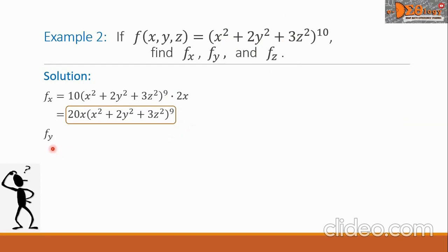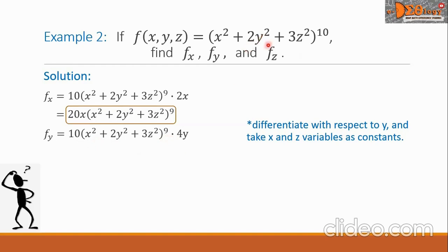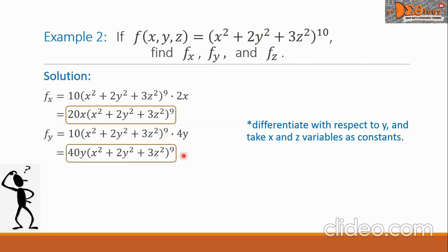Next is f sub y. We differentiate with respect to y, taking x and z as constants. By the chain rule, the derivative is 10 times the quantity (x squared plus 2y squared plus 3z squared) raised to the 9th power, times the derivative of 2y squared, which is 4y. Simplifying, 10 times 4 gives 40, so f sub y equals 40y times the trinomial raised to the 9th power.